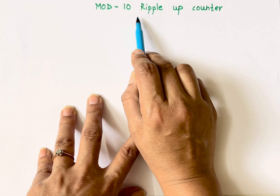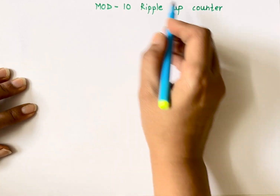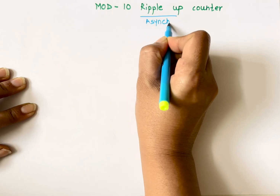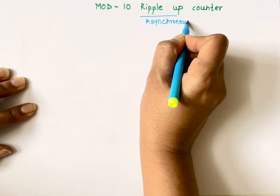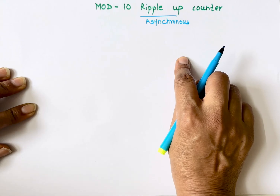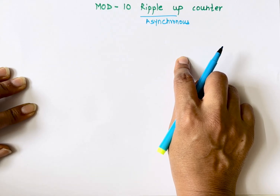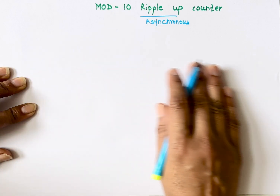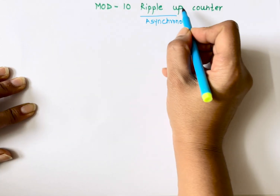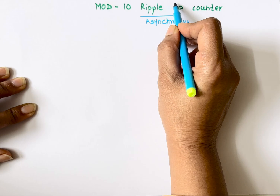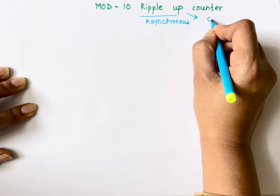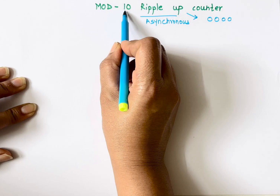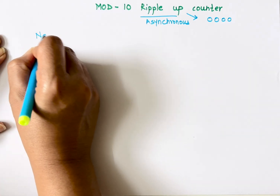This video is all about the Mod 10 ripple up counter. Ripple counter means asynchronous counter. An asynchronous counter is where the external clock is connected to only one flip-flop, and the output of the first flip-flop acts as the clock input to the second. This means a single external clock is not connected to all flip-flops. This is an up counter, so it will count in the upward direction, starting from 0 0 0 0.